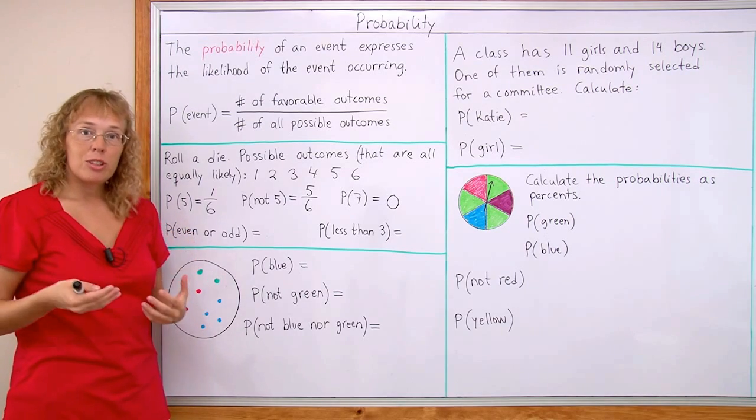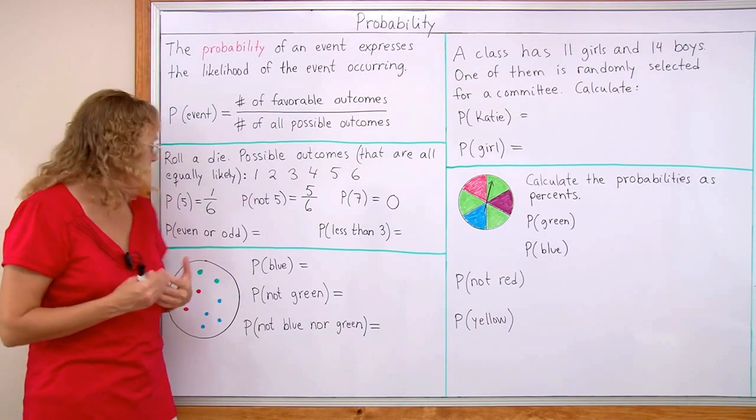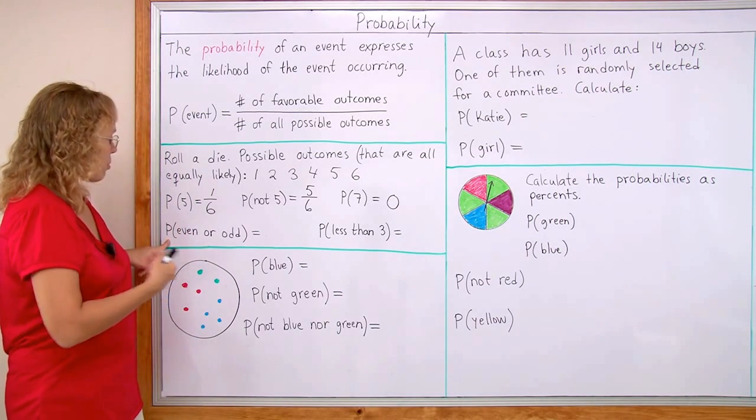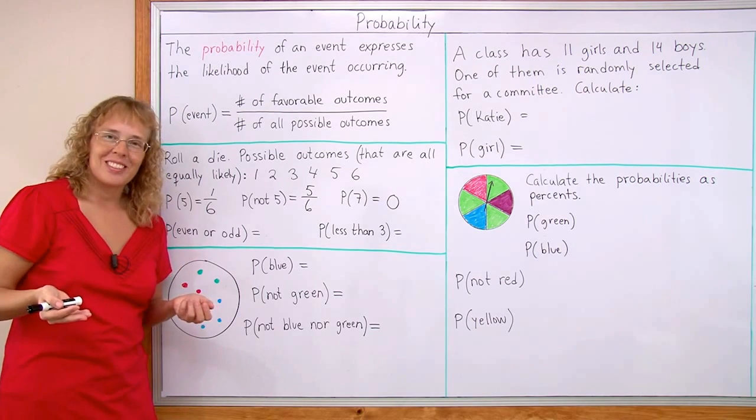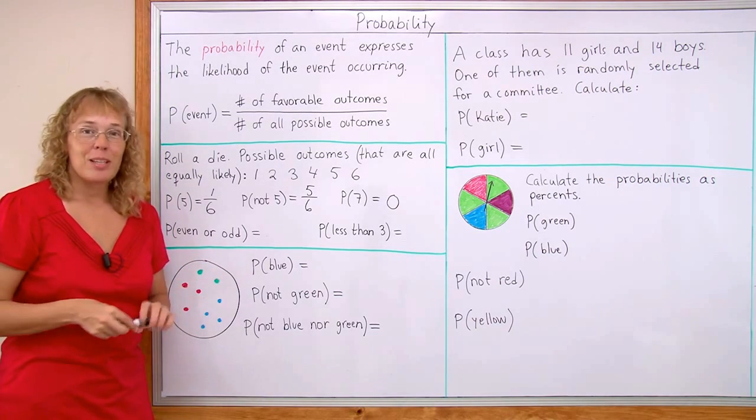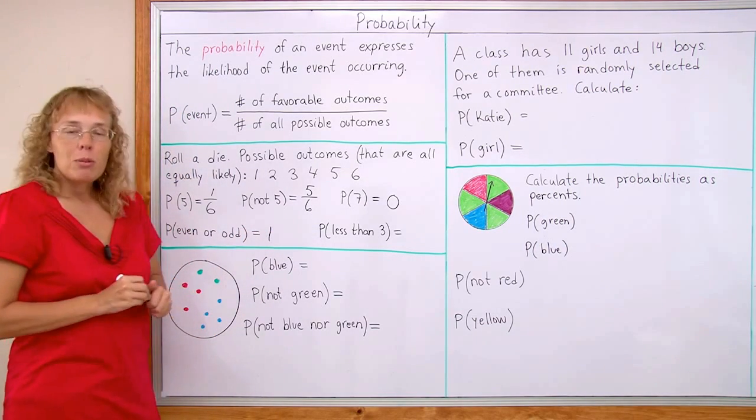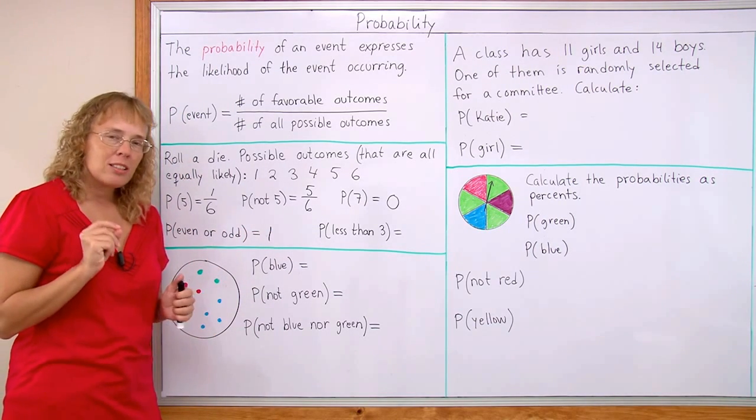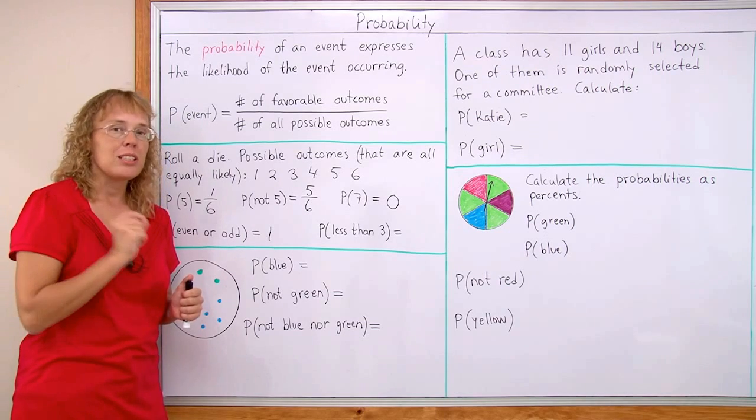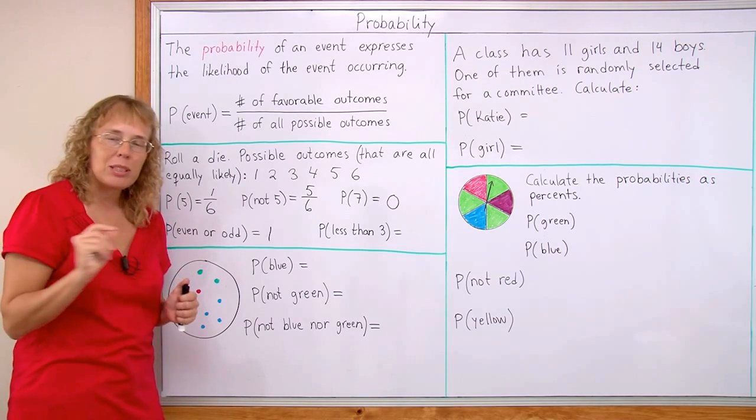And then there is also a possibility for a sure event to happen. Let's say that we ask the probability of getting either an even or odd number. That's a sure event to happen. And so the probability is one. Probability of an event is always a number between zero and one. It can be zero or one or anything in between.